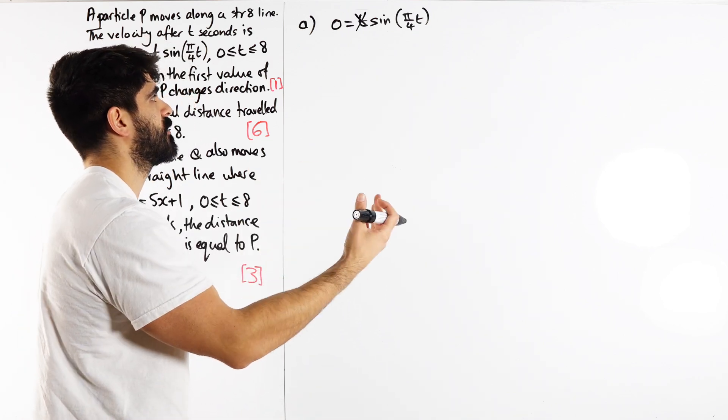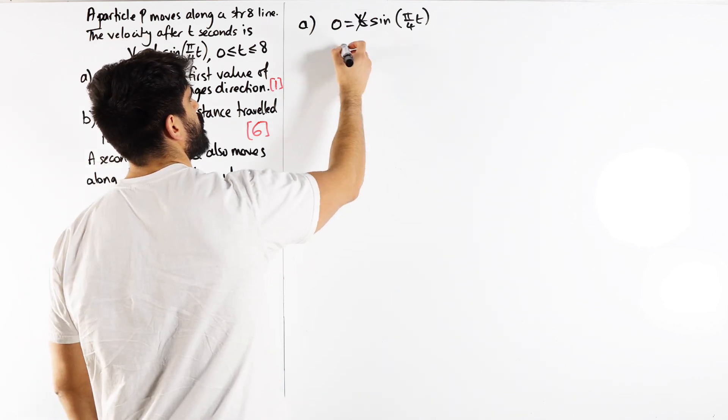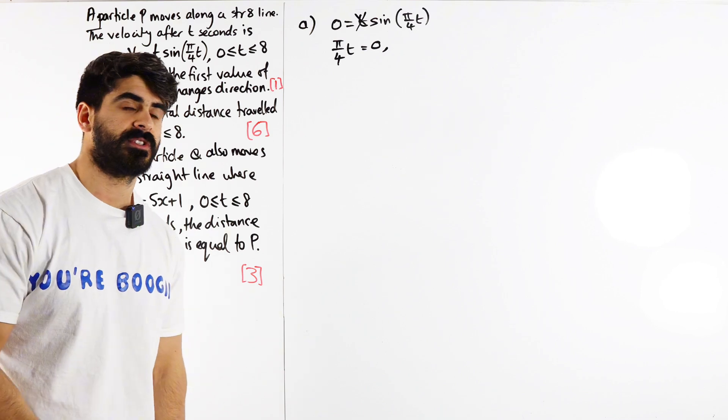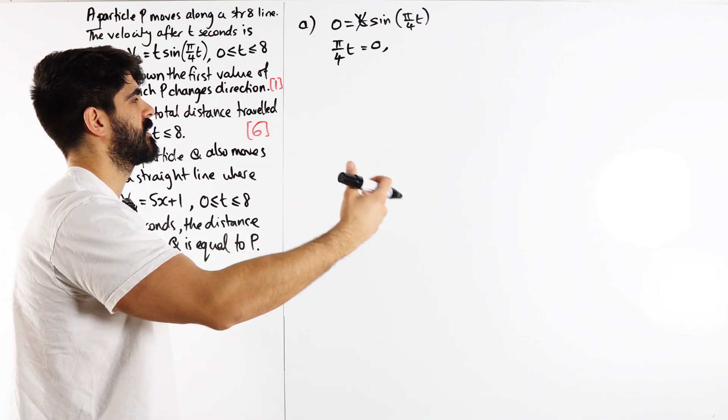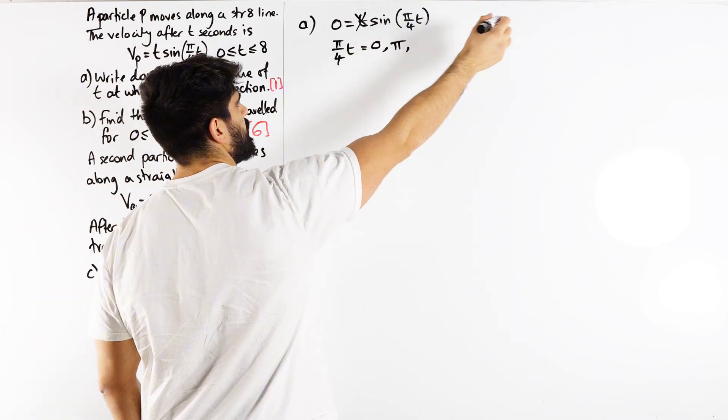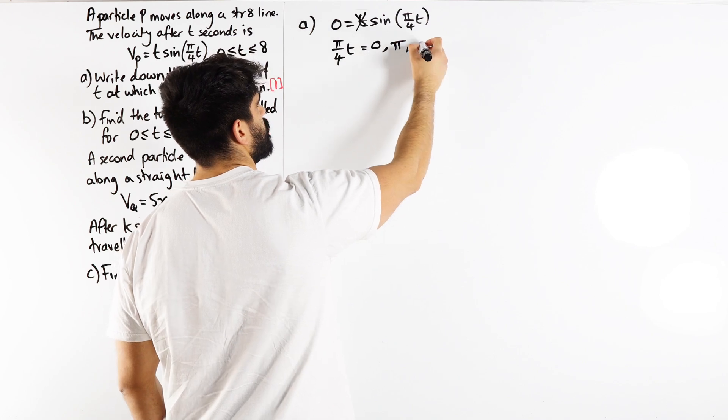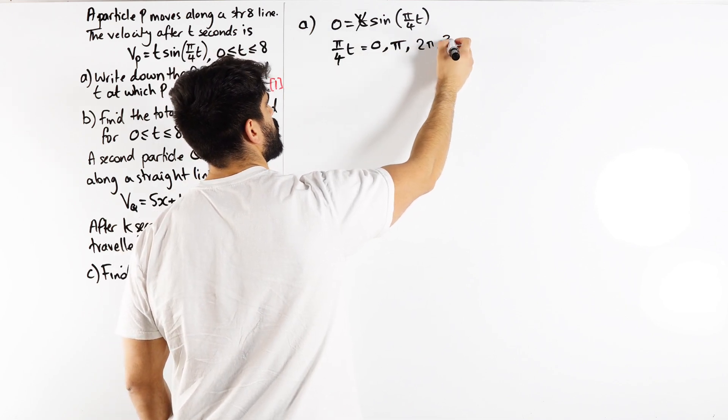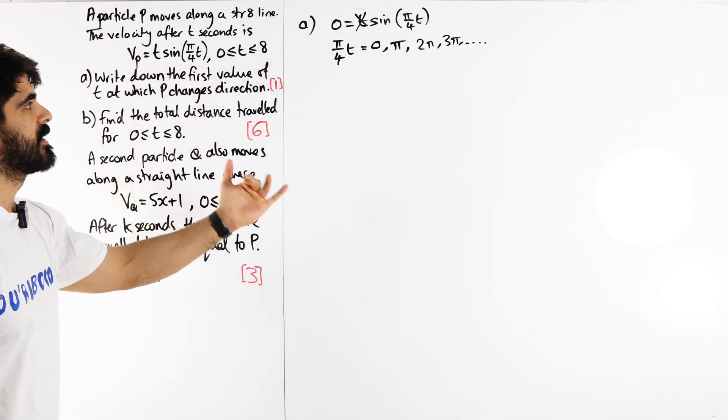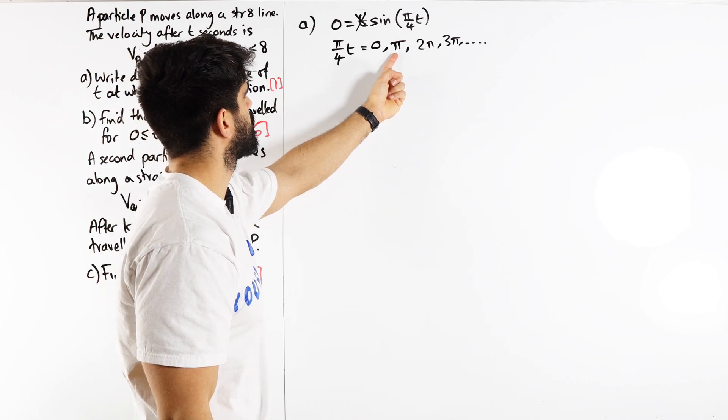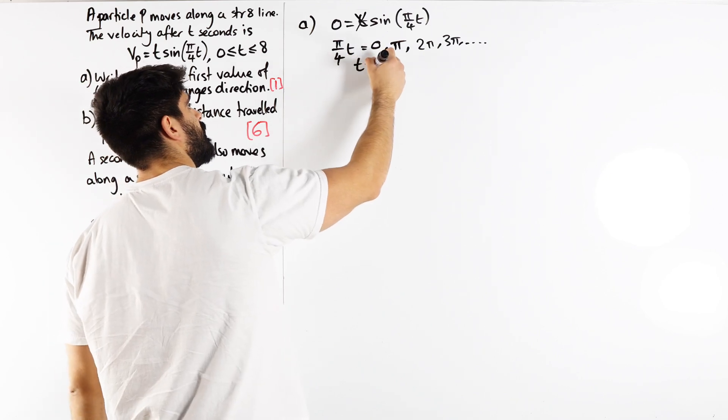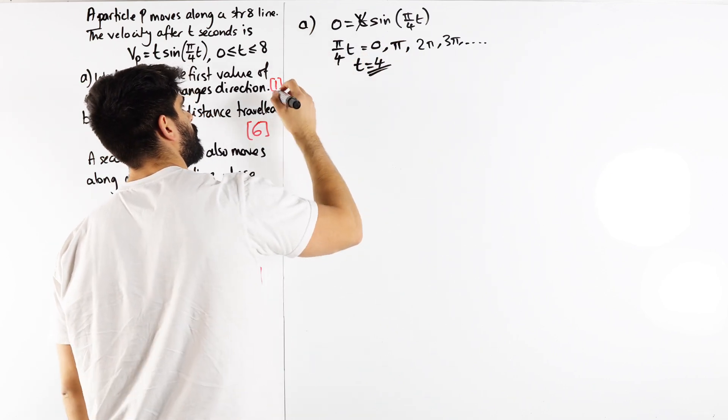Setting something to 0 here, we get 0 = t sin(π/4 t). You get that t = 0, which we're not interested in, so I'm going to cross that off. Then inverse sine of 0 is just 0, which again we are not interested in. To get the secondary value, we do π minus 0, which is just π. Then we keep adding 2π to get the other values: π, 2π, 3π, etc. But we want the first value when it changes direction that's not 0, so it's going to be this one. Times that by 4 and divide by π, so t = 4.